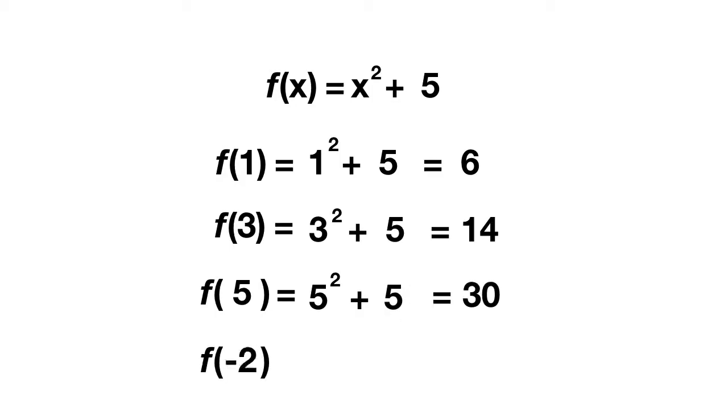Finally solve for f of negative two. Well to do this, you have negative two squared plus five. And remember that negative two squared is positive four, and four plus five equals nine. Here's your last function for today. The function f(x) equals four x minus six. Solve for f of one. Well when you plug in the one, you get four times one minus six. Four times one is four, and four minus six equals negative two.